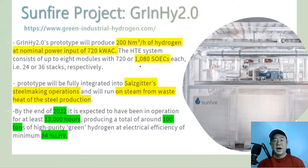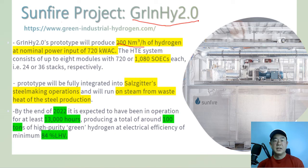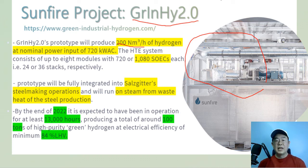Lastly, Sunfire is working on a project to produce 200 normal cubic meters per hour of hydrogen by participating in the Green Industry Hydrogen 2.0 project. A prototype is installed in SALZGITTER steel-making operations and uses steam from waste heat. By the end of next year, it plans to produce 100 tons of hydrogen at 84% electrical efficiency, and is expected to evaluate system durability over an operating time of about 13,000 hours.